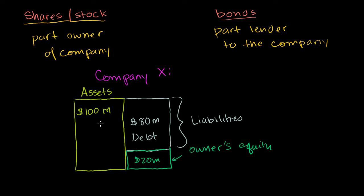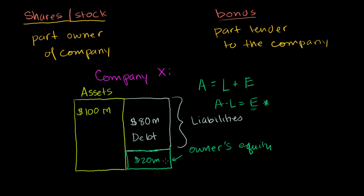You're getting a little introduction to accounting here: assets always equal liabilities plus equity. Or equivalently, assets minus liabilities equals equity. What we have left over is always what we own minus what we owe — that is what the owners have. When we say I'm part owner of a company, that means I have a piece of this equity.